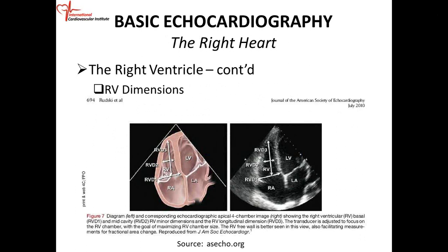Looking at the actual echo — this is an apical four-chamber view. The heart is not going to come labeled, but you can see the tricuspid valve is more apically positioned, lower in the ventricle than the mitral valve. And there's a moderator band right there. You can see the trabeculations — the RV tends to be much more trabeculated — and there are multiple papillary muscles.